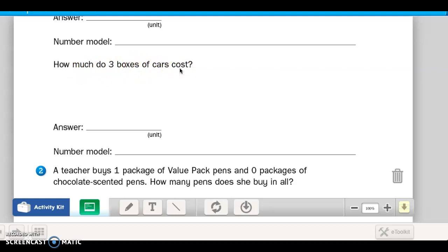So let's look at our dollar store poster and cars. There are 10 cars per box and they are four dollars per box. So if you buy three boxes of cars, here we go, one, two, three, and each one cost four dollars.